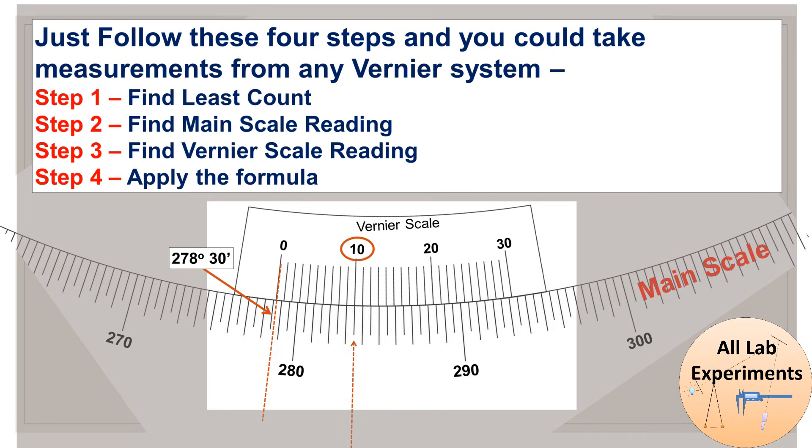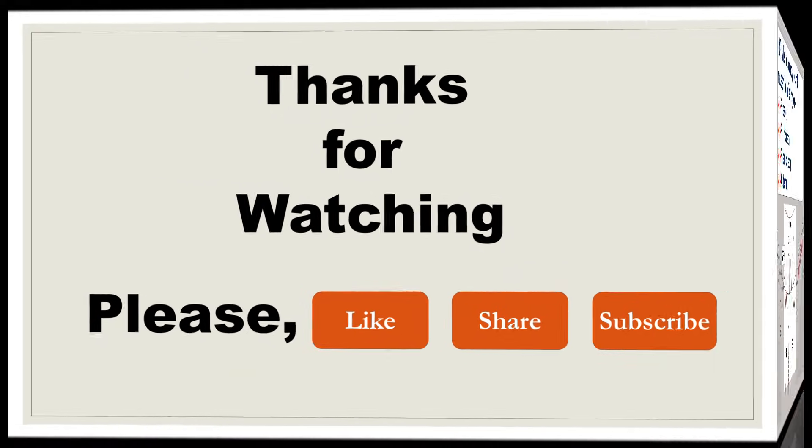So in a nutshell, just follow these 4 steps and you can measure the reading of any spectrometer. Step 1: find the least count. Step 2: find main scale reading. Step 3: find vernier scale reading. And step 4: apply the formula. Thanks for watching.